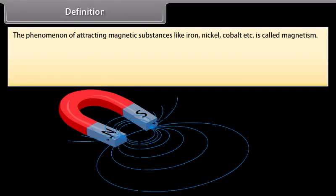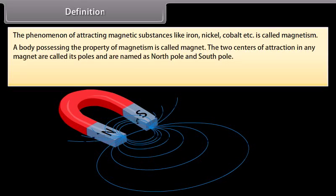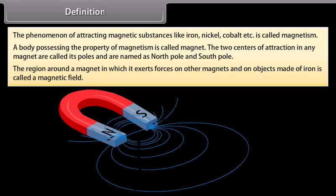The phenomenon of attracting magnetic substances like iron, nickel, cobalt, etc. is called magnetism. A body possessing the property of magnetism is called a magnet. The two centers of attraction in any magnet are called its poles, and are named as north pole and south pole. The region around a magnet in which it exerts forces on other magnets and on objects made of iron is called a magnetic field.